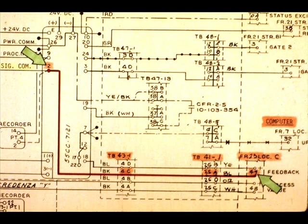Signal common is routed from controller pin 2 to TB43-1 terminal 4C, TB41-1 terminal 25A to computer frame 23, location C, 49-.